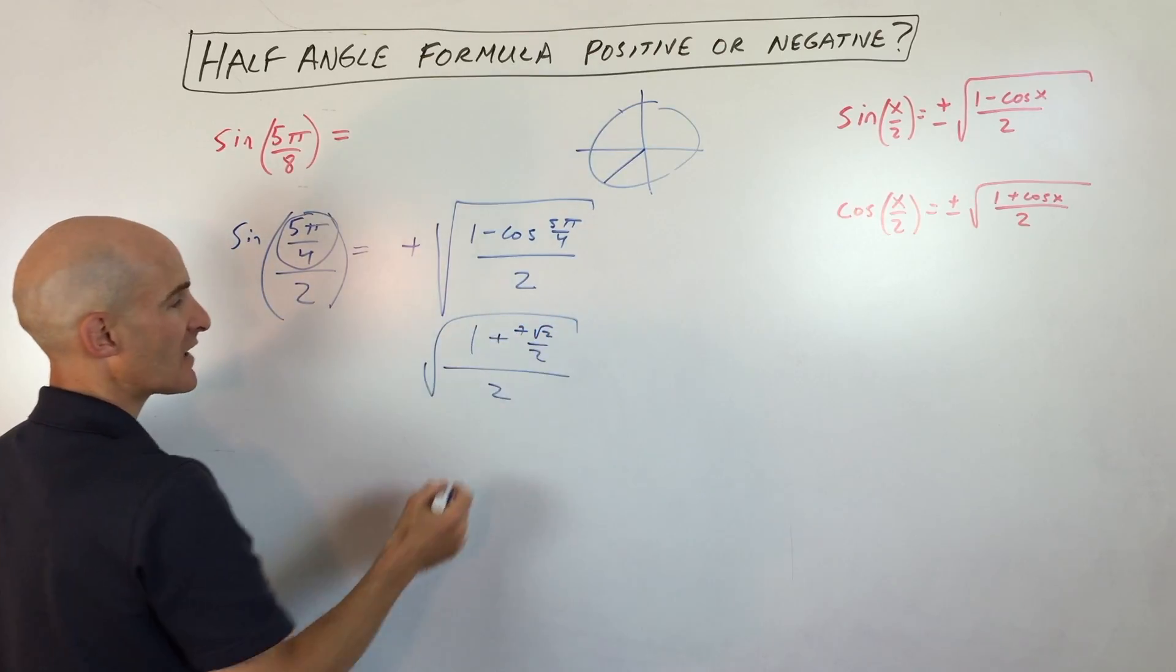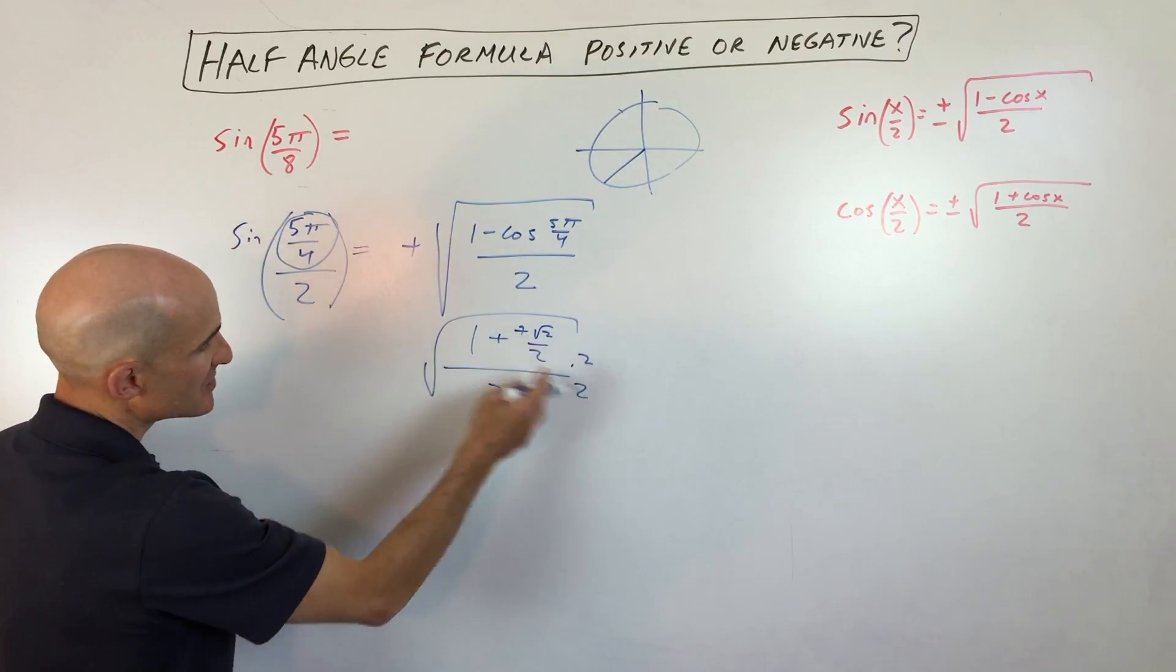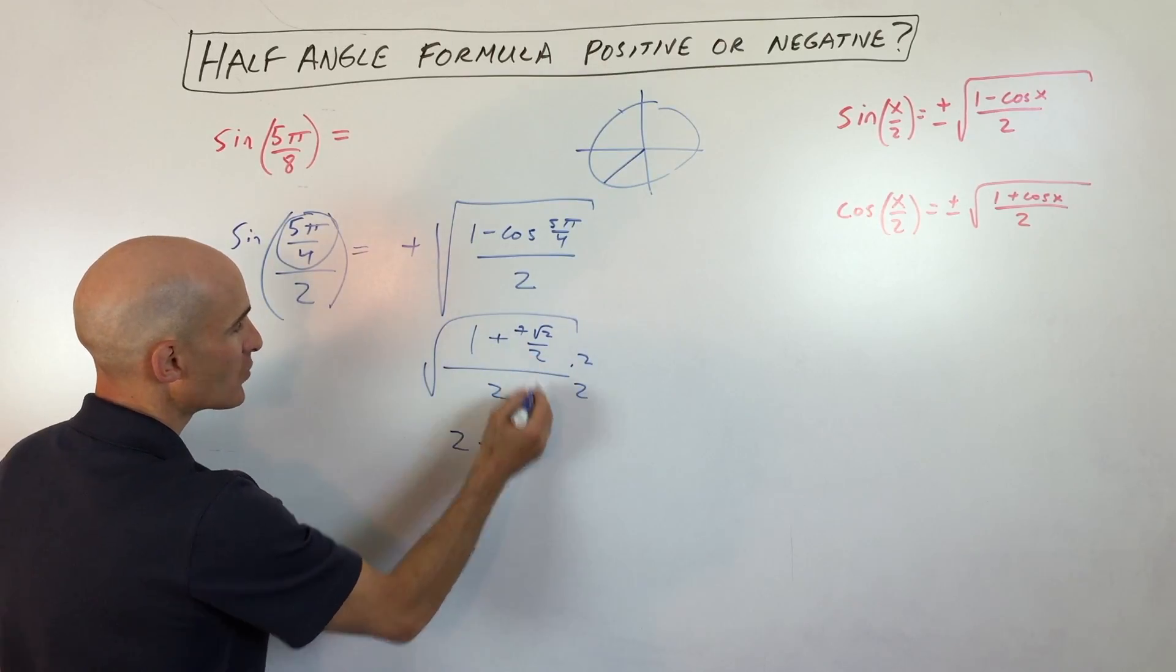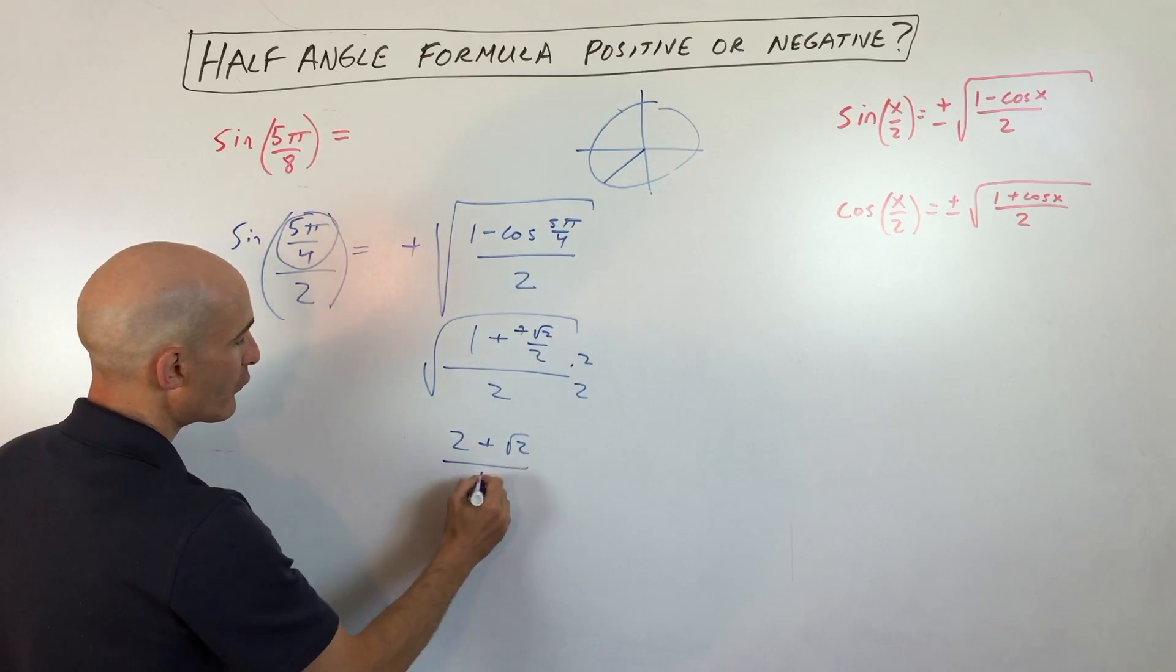The two negatives are going to cancel, and what I'm going to do here is I'm going to multiply the numerator and denominator by 2 to clear this complex fraction. So if I distribute the 2, I get 2 plus square root of 2, because these 2's are going to cancel in the denominator here, over 4.